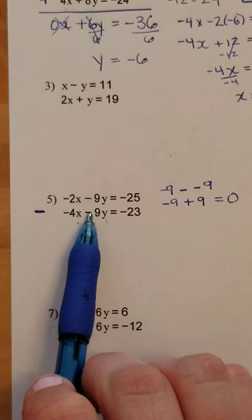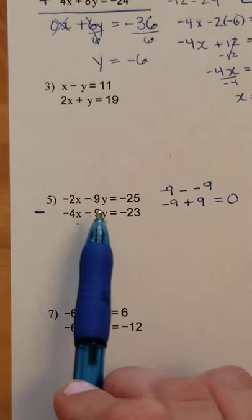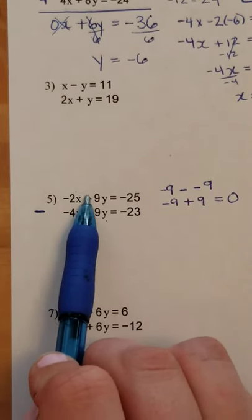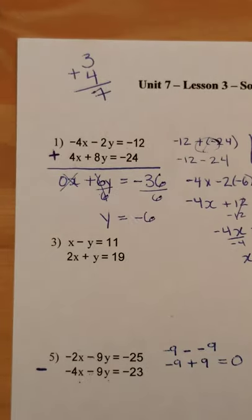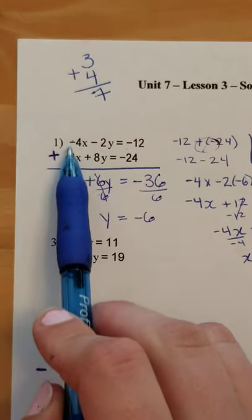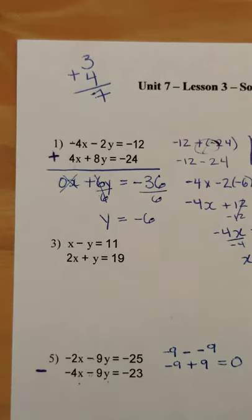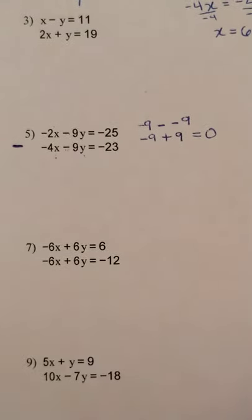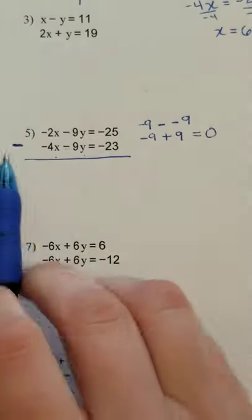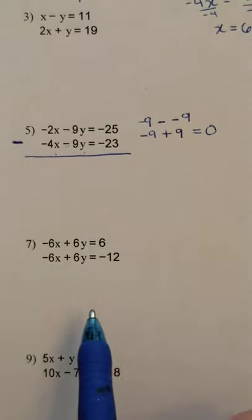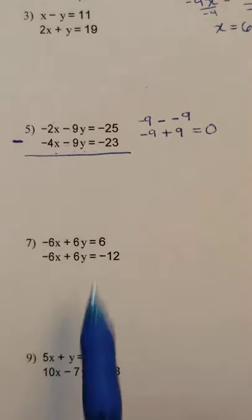So when the symbols are the same, now listen closely. When the symbols are the same, you minus them. When the symbols are already opposites, you can just add them. It's a little trick. Okay, but be careful because when you're minusing these two guys, you have to be fair and minus everything else as well.